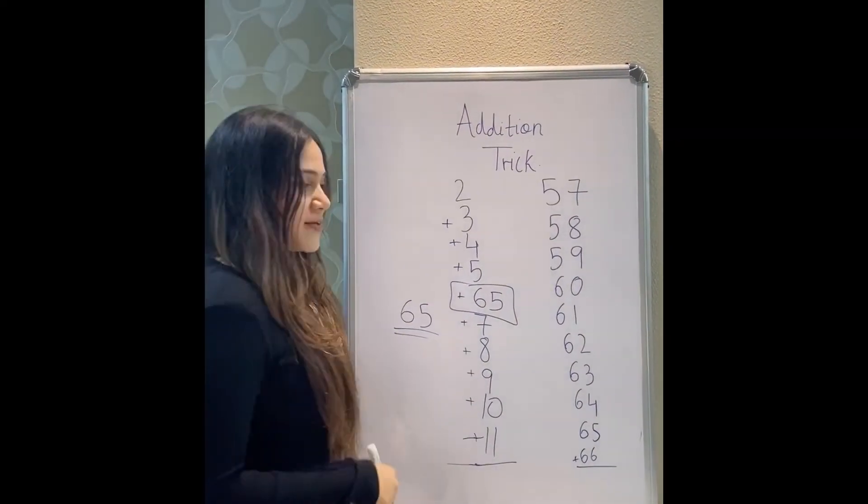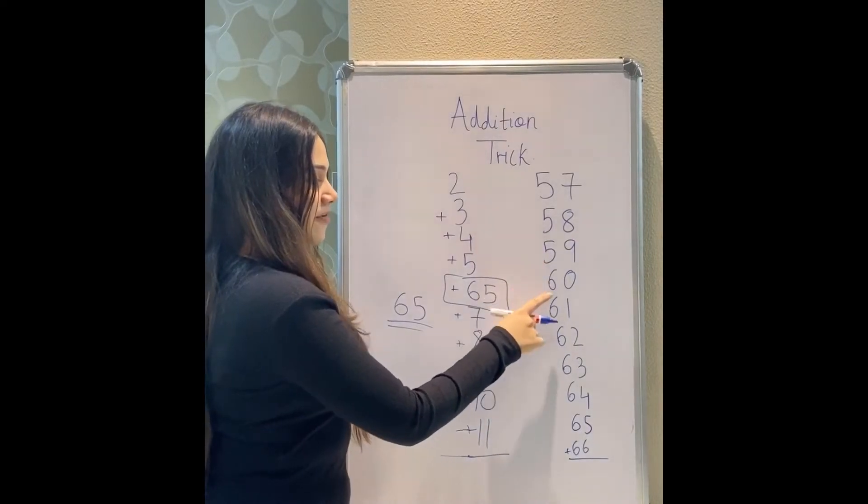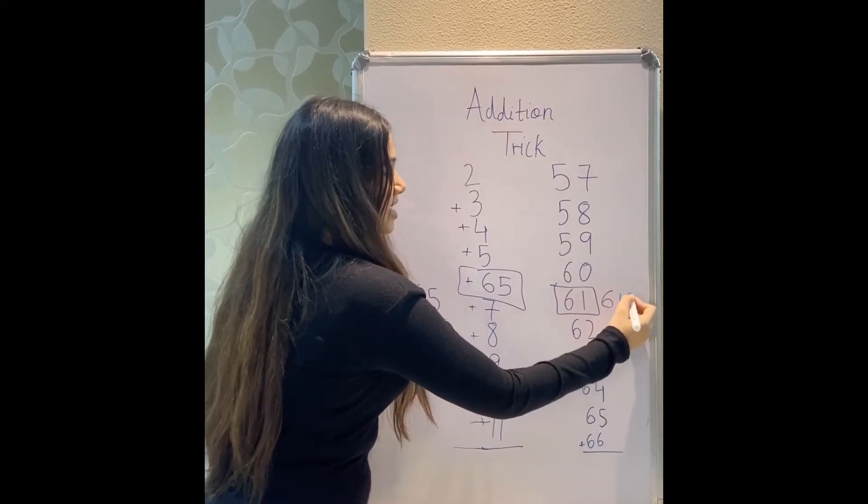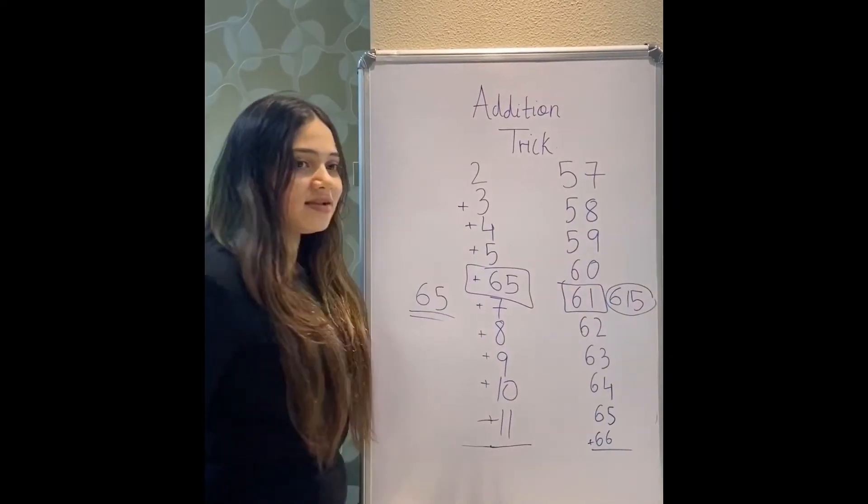Similarly, in this one, 1, 2, 3, 4, 5. This is my 5th number. My answer, the addition of all these 10 numbers is, 6, 1, 5.